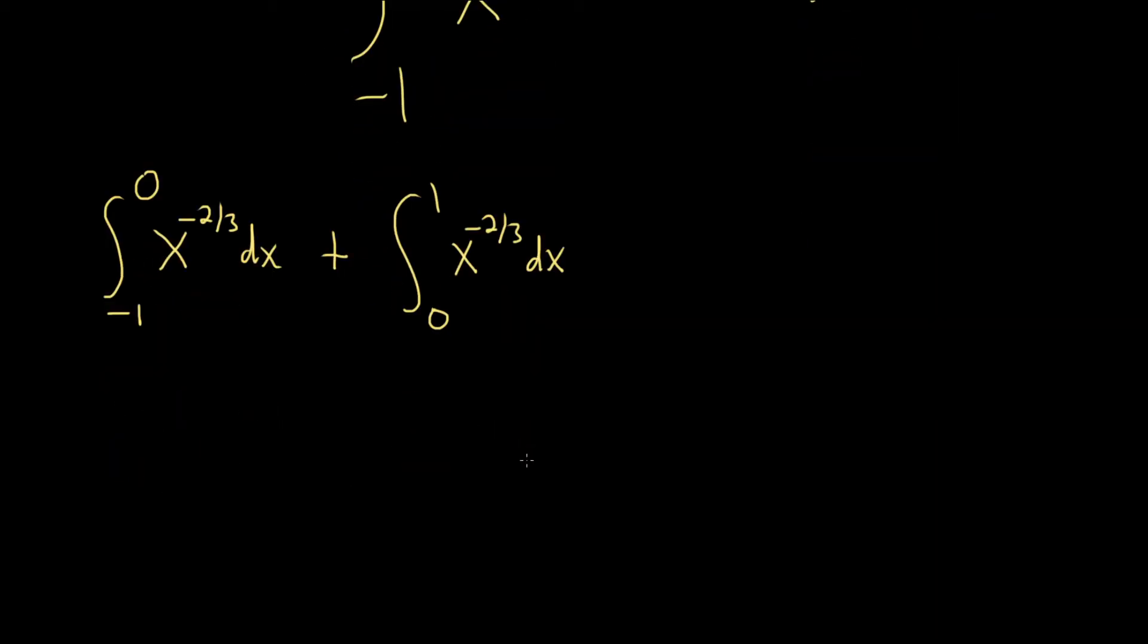Now what we do is we replace the discontinuous point with the variable and we let that variable approach the number as follows. So we're going from negative 1 to b, x to the negative 2 thirds dx, and we'll let b approach 0.